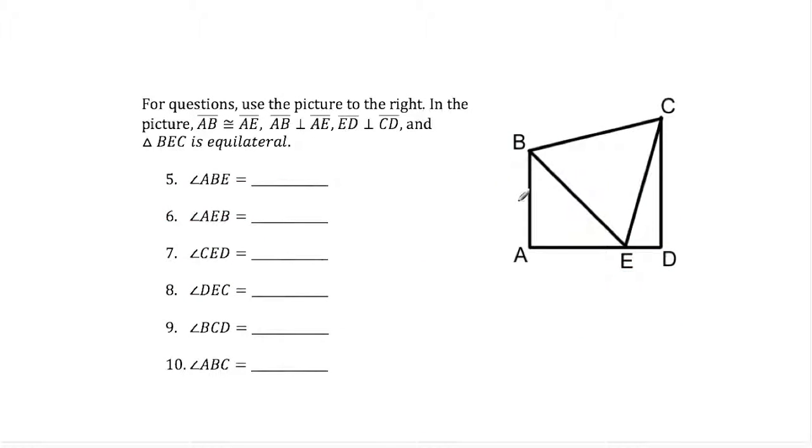Next up we have this picture. When you have a picture like this you have to find all the angles, read the instructions and apply that to the picture. AB is congruent to AE, we'll make little notations there. That means this is an isosceles triangle so we conclude these two angles are the same. AB is perpendicular to AE, that means this is a right angle. ED is perpendicular to CD, that means this is a right angle. And then we have BEC is equilateral so all these sides are the same. Well if all these sides are the same, all the angles are the same so they're all 60 because 180 split 3 equal ways is 60.